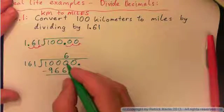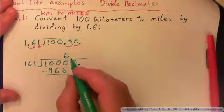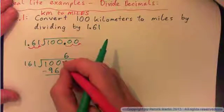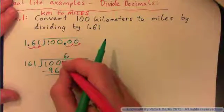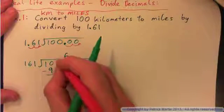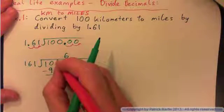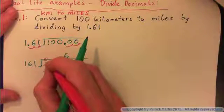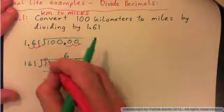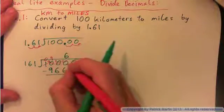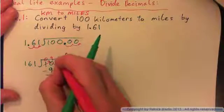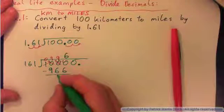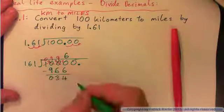Then subtract. We've got to borrow 1 to make that a 10, but I can't get anything from there, so this becomes a 0, and we borrow the 1 over here — that becomes 10. But I've got to borrow 1 over here, so this becomes a 9, and borrow 1 back, so that becomes 9. So 10 minus 6 is 4, 9 minus 6 is 3, 9 minus 9 is 0.